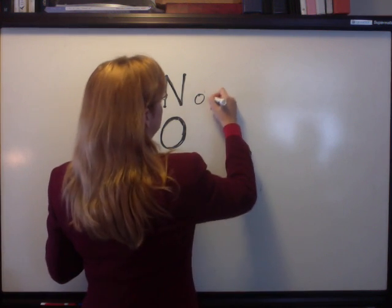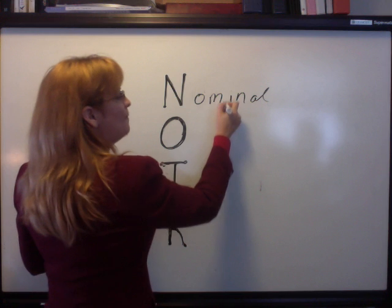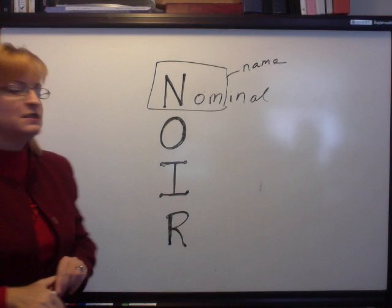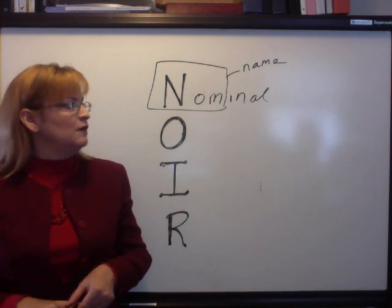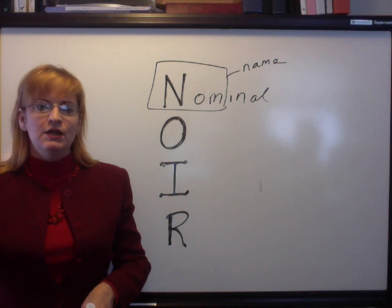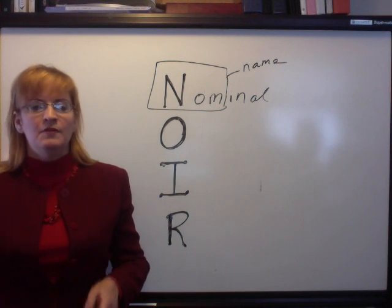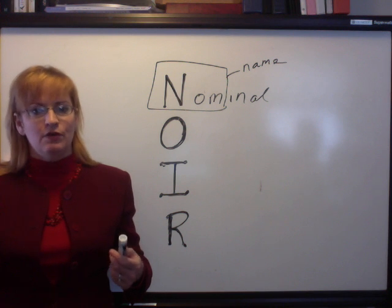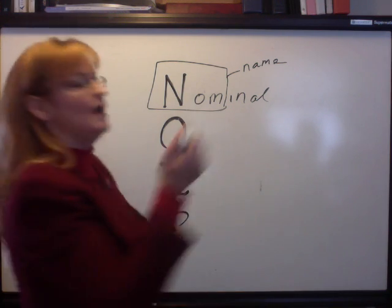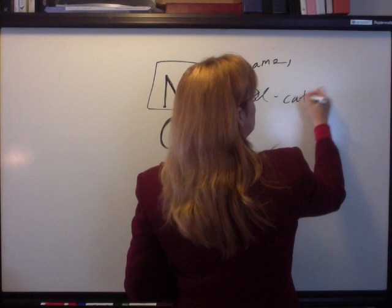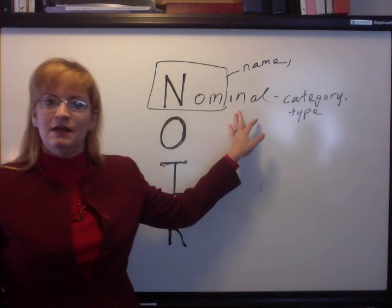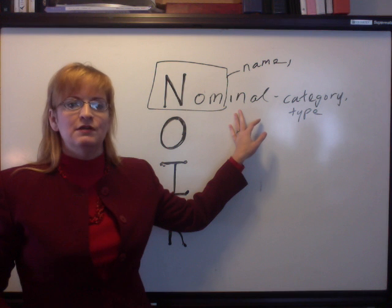You can measure a dependent variable on a nominal scale. NOM means name, and that means you're just naming or labeling what you're measuring. And if you assign it a number, that number is not meaningful. I could call red one, green two, and blue three, but that doesn't mean that one is bigger than two is bigger than three — they're colors. Think of a nominal scale of measurement: the only thing it tells you is the name, meaning the category or type something falls into. You cannot necessarily rank data measured on a nominal scale. All you've done is put it in categories.